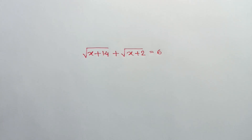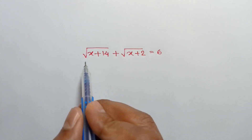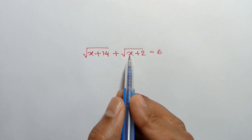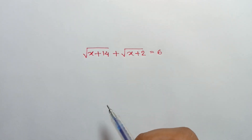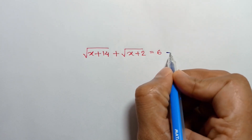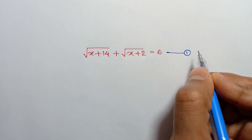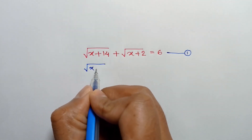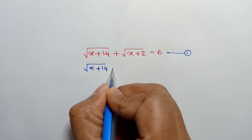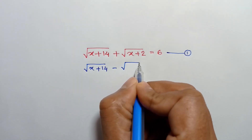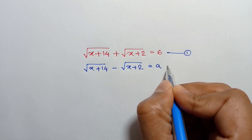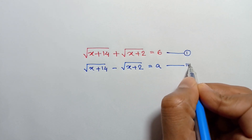Hi everyone. In this video I am going to show how to solve square root of x plus 14 plus square root of x plus 2 is equal to 6. Let's call it equation number 1, and consider square root of x plus 14 minus square root of x plus 2 is equal to a. Call it equation number 2.